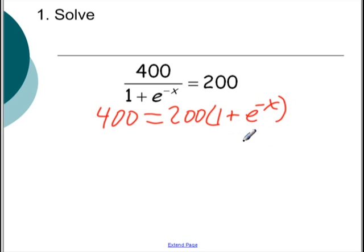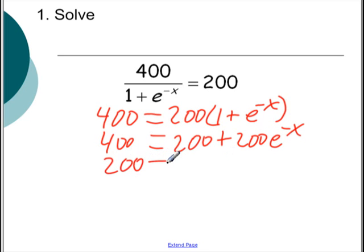Alright, still a little wonky looking but let's see what we can do. Let's go ahead and distribute over here. So that's 200 plus 200 e to the negative x. And now let's try to isolate this exponential part. Let's try to get this part by itself. So we'll subtract the 200 on both sides. So we get 200 equals 200 e to the negative x.